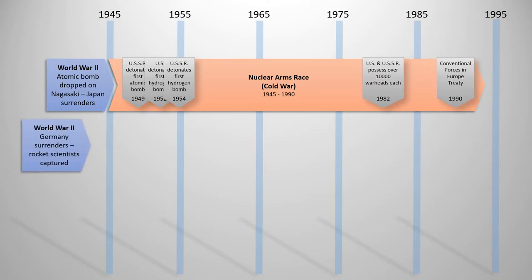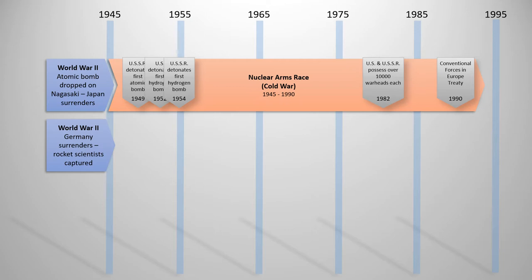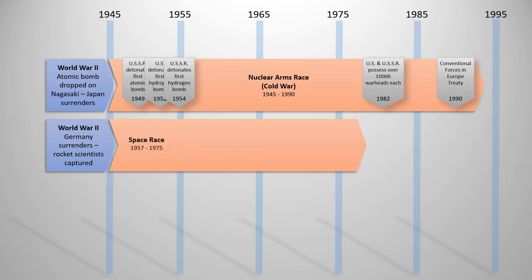From World War II, when Germany surrendered, they had quite a few scientists working on rocket technology. Germany had developed the most advanced rocket technology of the century, and their scientists were sought by both the United States and Soviet Russia. Germany was attacked from two sides — Russia from one side, the United States and Allied troops from the other — so both countries captured these rocket scientists.